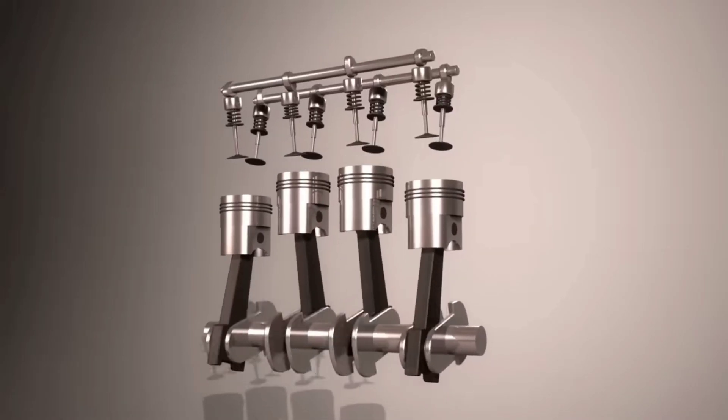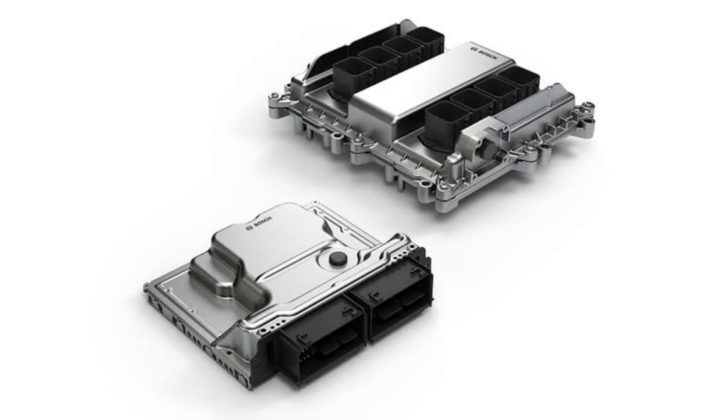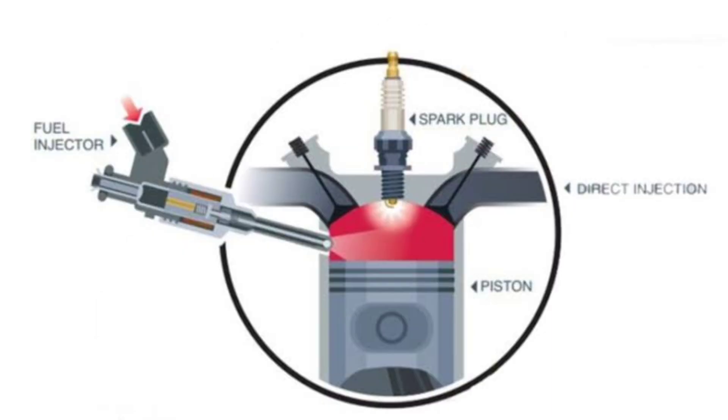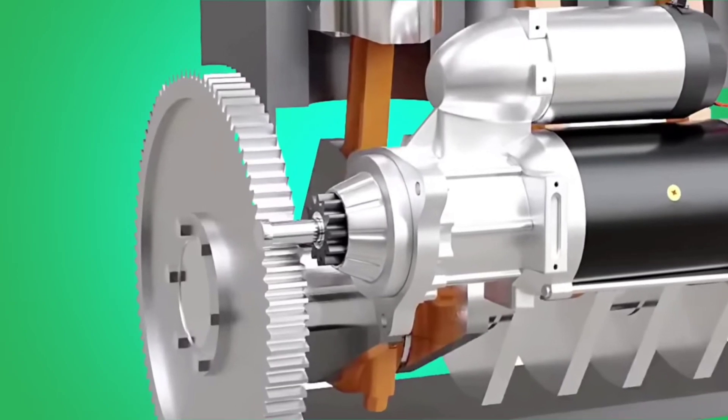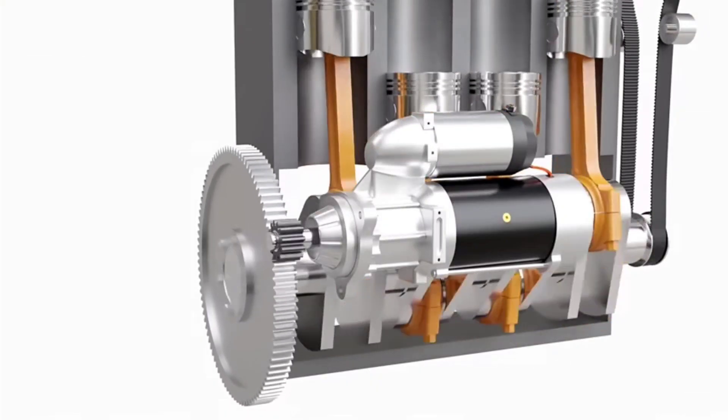But we're not done yet. While the engine cranks, the Engine Control Unit or ECU kicks in. It precisely controls the fuel injection and air intake to create the ideal mixture for combustion. This step is vital—without the right mixture, the engine won't start efficiently.